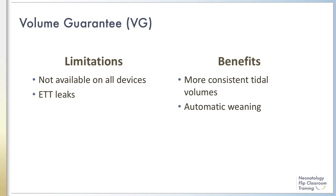These technologies on some devices make volume guarantee feasible for all infants. In addition to a more consistent tidal volume delivered to patients, the volume guarantee mode has the benefit of allowing automatic weaning, requiring fewer blood gases. In this mode, the clinician should not necessarily lower the target tidal volume to wean the ventilator unless there has been a change in patient condition. The improved compliance of the respiratory system and the infant's respiratory effort will lead to a decrease in the pressure required to achieve the target tidal volume. Lowering the target tidal volume below the patient's physiologic needs will increase the work of breathing and could cause atelectasis.